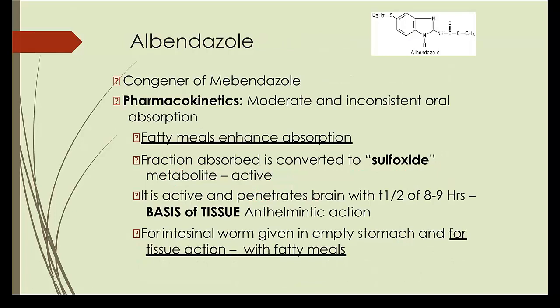Moving on to albendazole — it is a congener of mebendazole and again in the benzimidazole class. The mechanism of action is the same: it inhibits beta-tubulin polymerization, thereby inhibiting glucose transport and mitochondrial fumarate reductase enzyme. So the mechanism of action is the same as mebendazole.